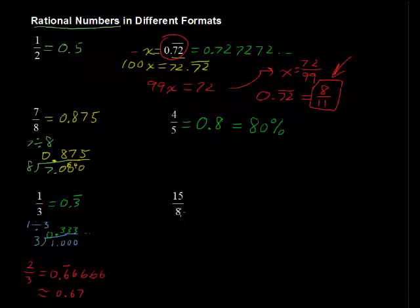Now what if we have 15/8, an improper fraction. It's still a rational number. It's a ratio of 15 to 8. And you can play the same trick that we did over here of dividing, and I'll cut to the chase on this one and tell you that this equals 1.875.